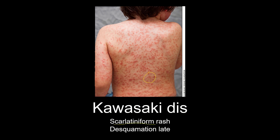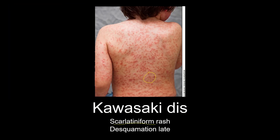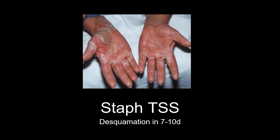Kawasaki disease is seen in children less than 8 years old and you will see symptoms like pharyngitis, vasculitis, etc. Toxic shock syndrome will involve diffuse erythema and desquamation 7–10 days later, and the patient will have hypotension when presenting to the emergency department.